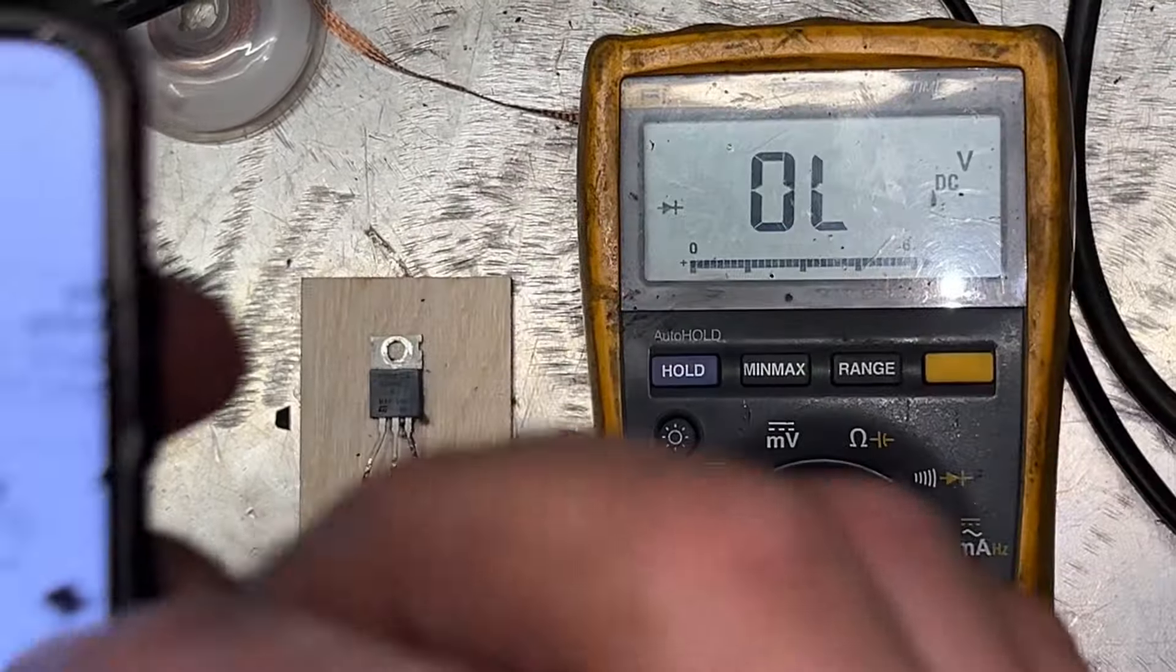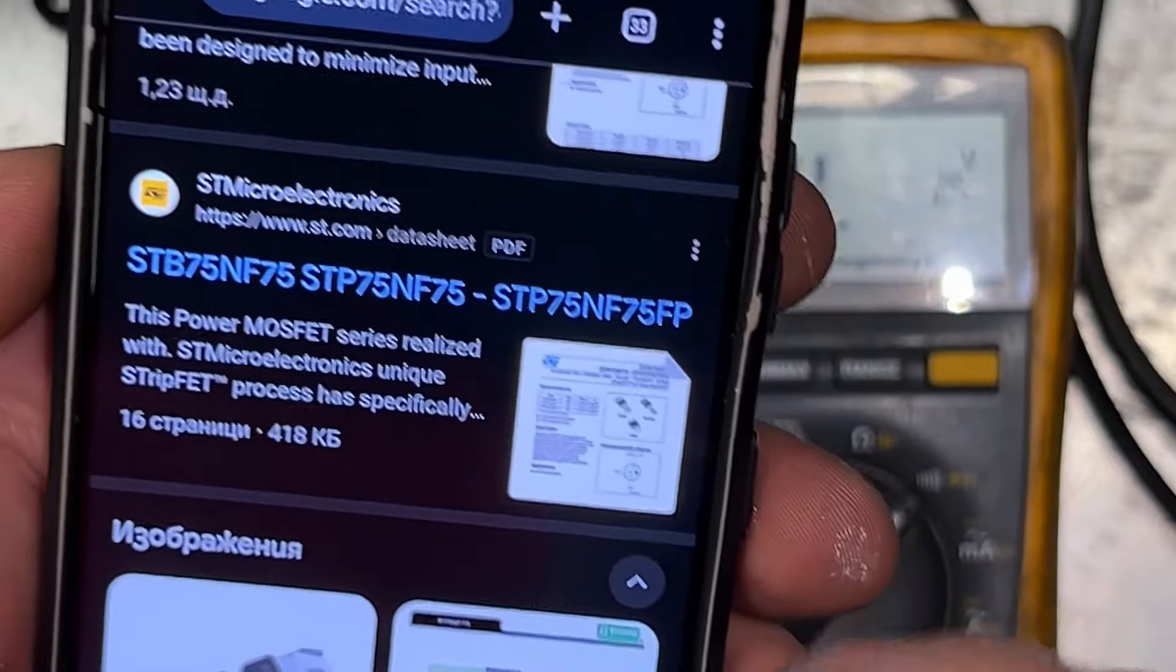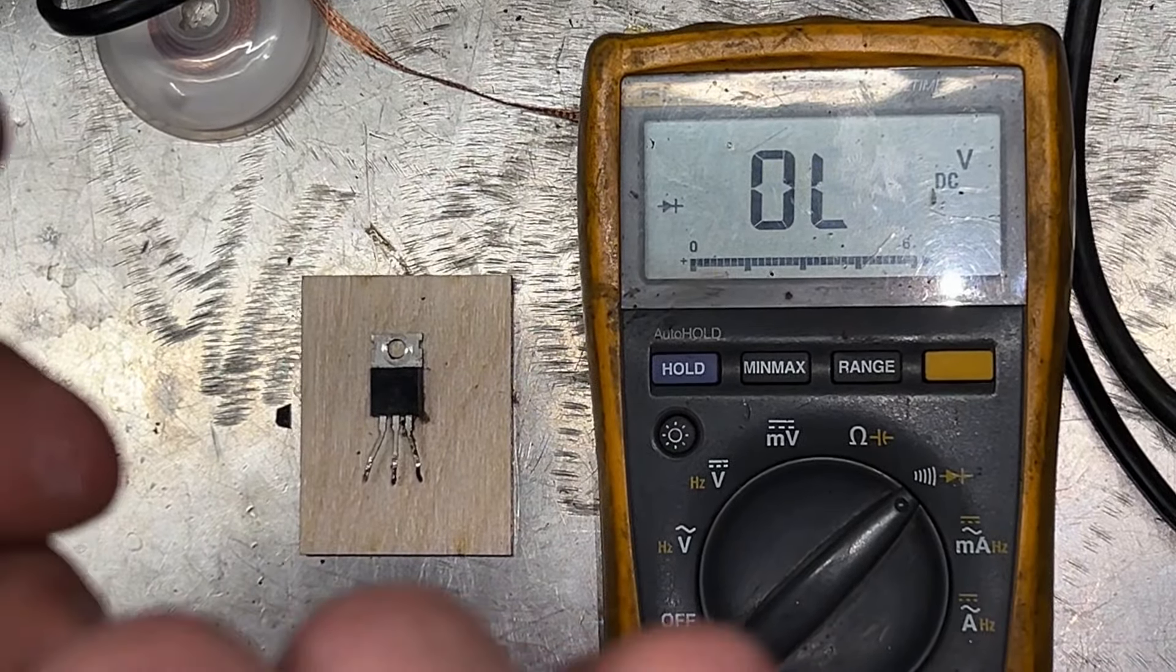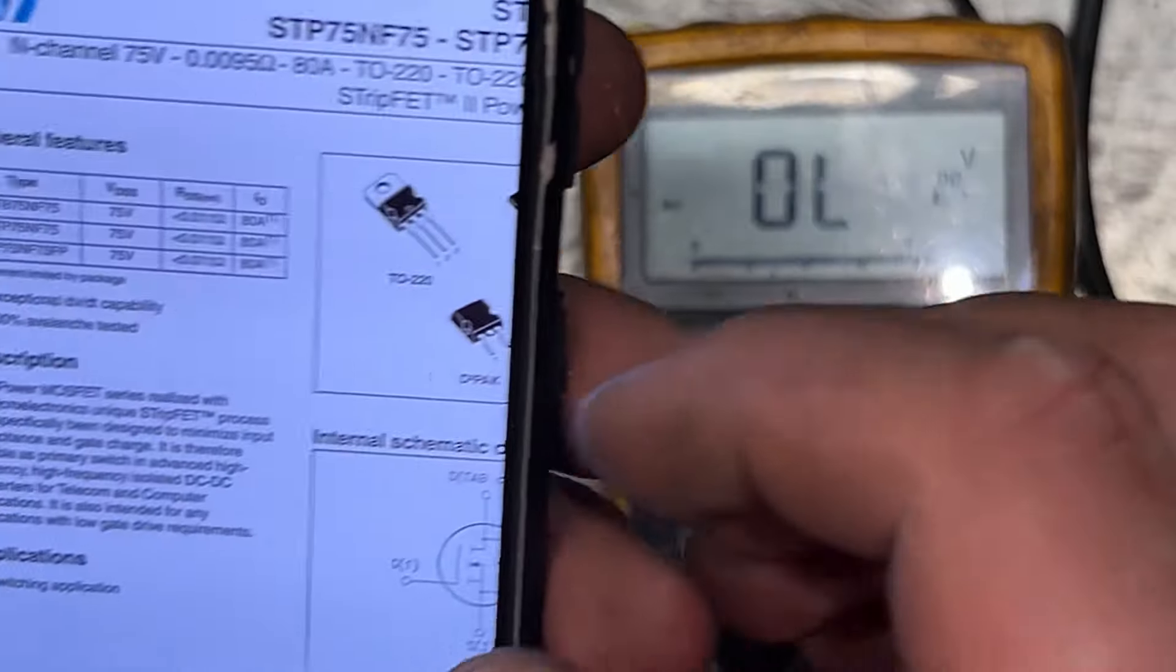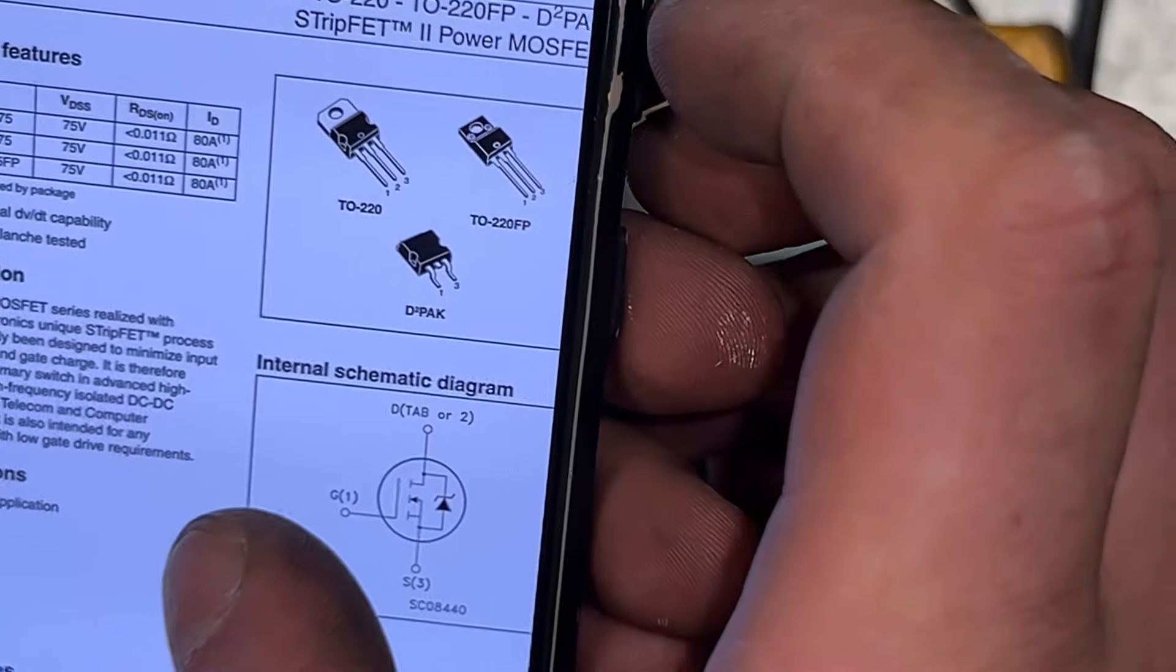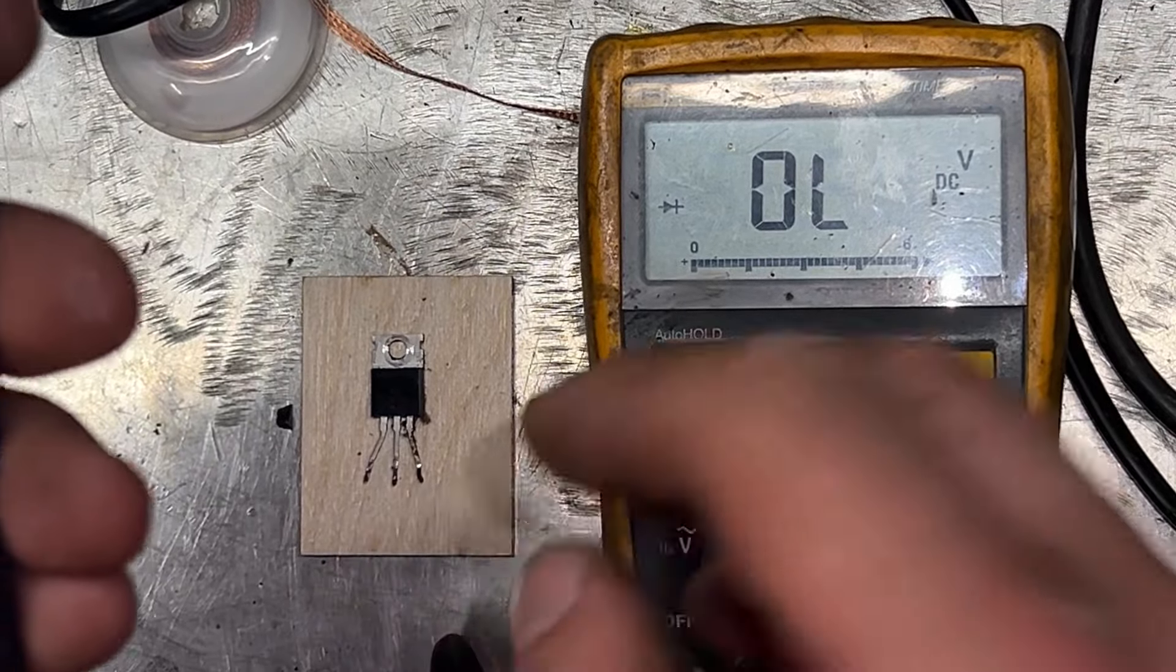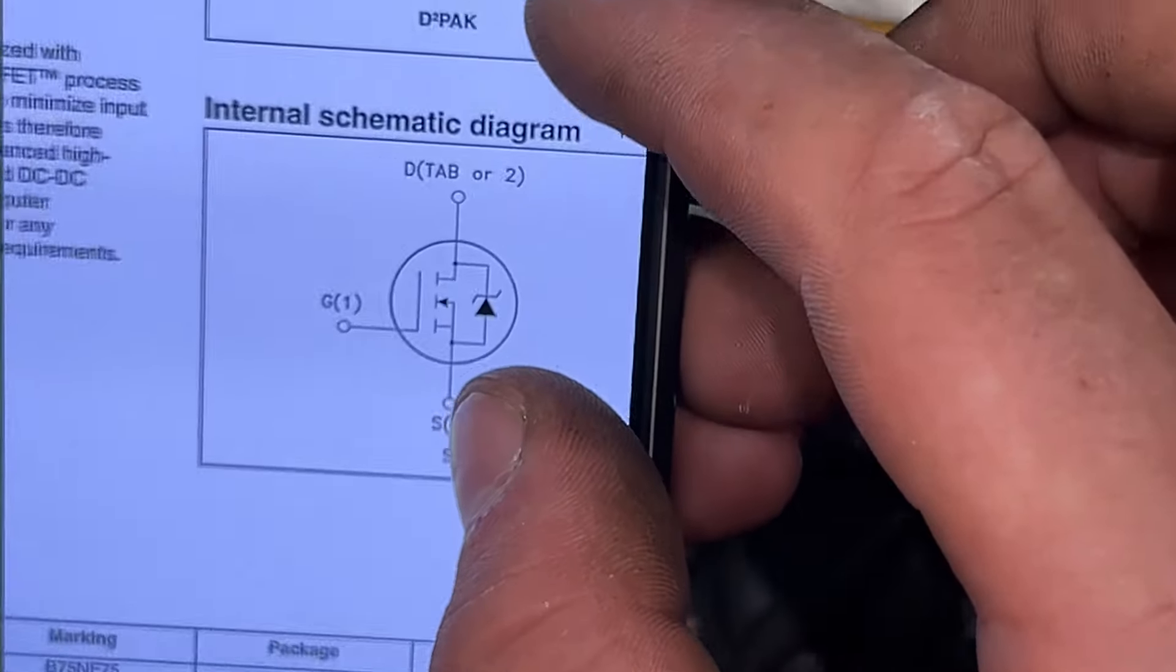And we pull up a datasheet just from here. We need to identify which leg corresponds to what on the datasheet. You can see here.